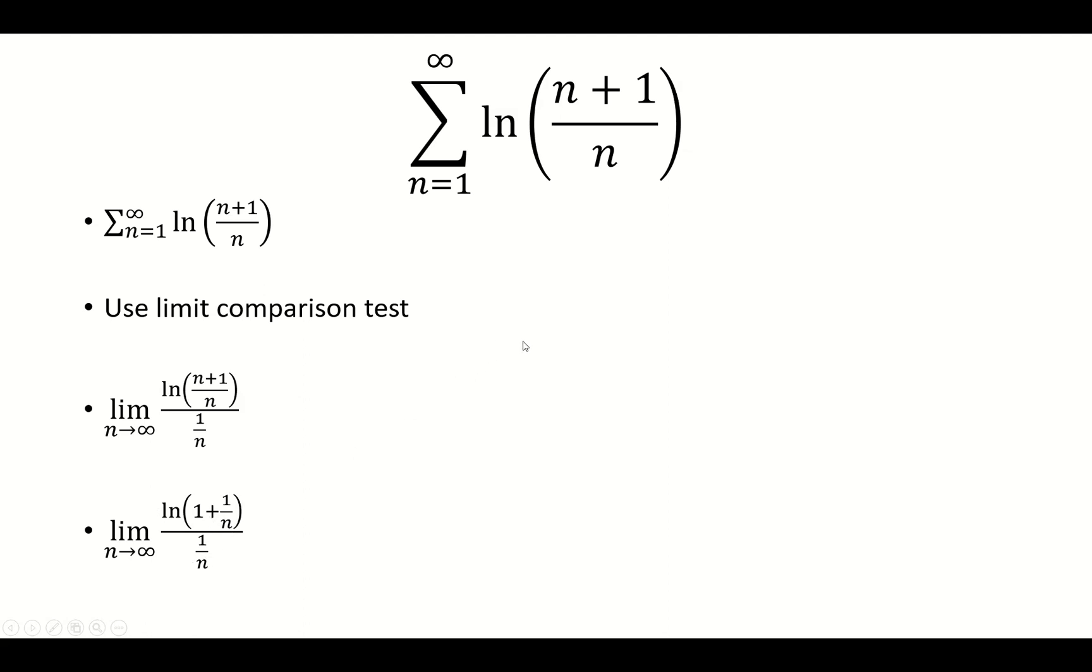If I let n approach infinity, I get 0 over 0, so I'm going to use L'Hopital's rule. Take the derivative of the top and the derivative of the bottom.